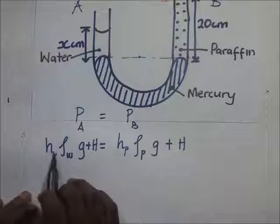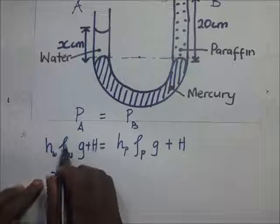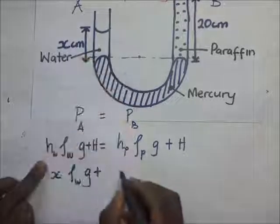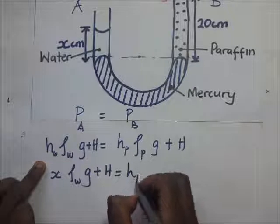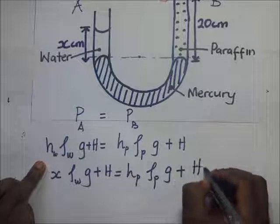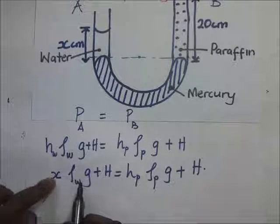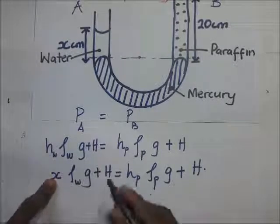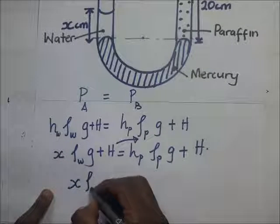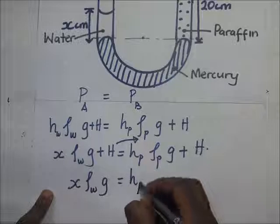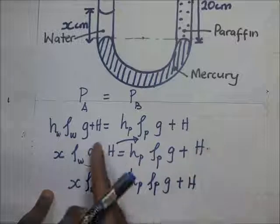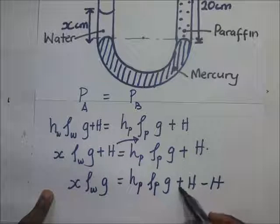We are interested in finding x, and x is the height of the water column. So: x times density of water times gravity, plus atmospheric pressure H, equals height of paraffin times density of paraffin times gravity, plus H. Since H appears on both sides, we transfer it across and these two H terms cancel out.